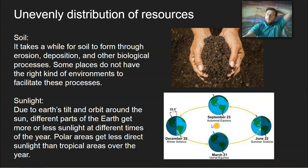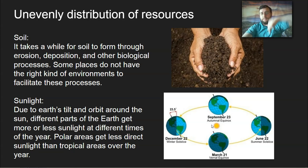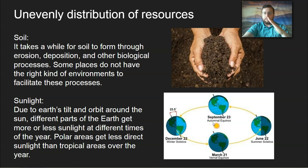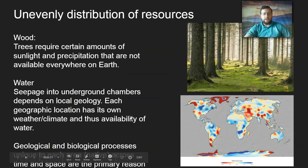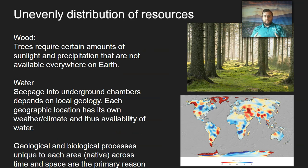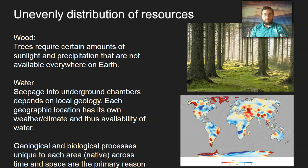Remember that when it's summer in the northern hemisphere, it's going to be winter in the southern hemisphere, and vice versa, because of the tilt — about 23.5 degrees. There's also wood, which is a renewable resource, but it's not evenly distributed because the growth of trees depends on soil richness and the productivity of the area, which requires a certain amount of temperature, sunlight, and precipitation.